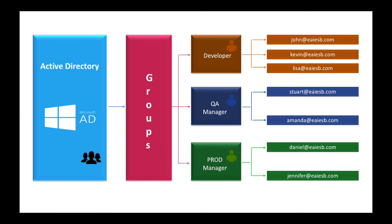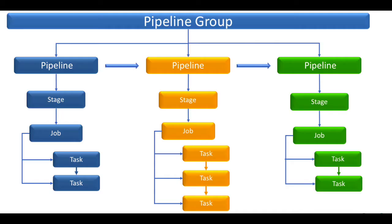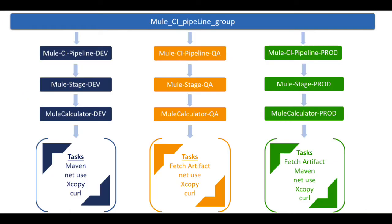Now we'll go back and see how to implement continuous integration and continuous deployment for promoting a Mule demo project onto three environments through GoCD. The first two — dev and QA — are on-premise environments, and the third one, prod, is the CloudHub environment.